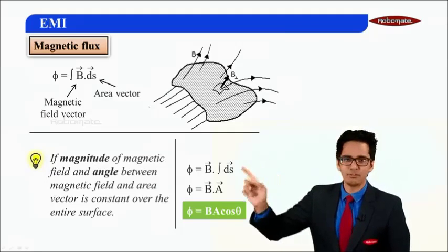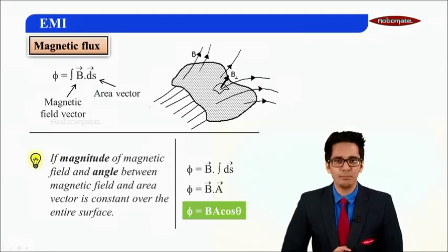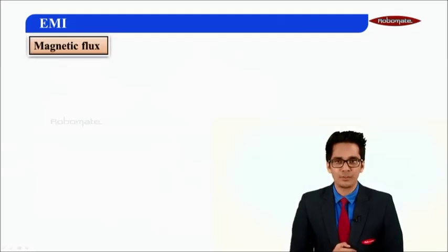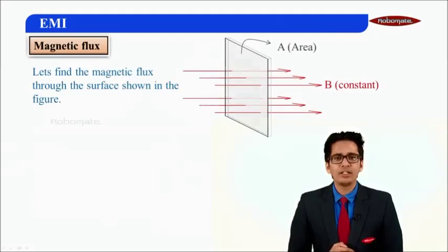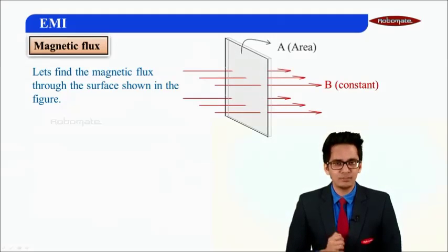The formula flux = BA cos θ is valid only when B is constant and the angle between B and the area is also constant over the entire surface. Then we can use this simple formula; otherwise, we have to use flux = ∫B·ds. Now let us calculate magnetic flux in some simple situations.